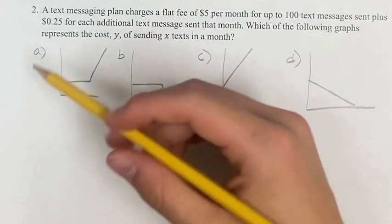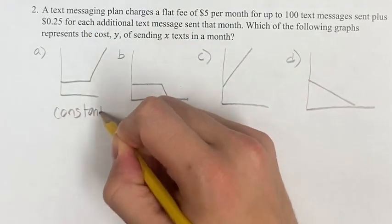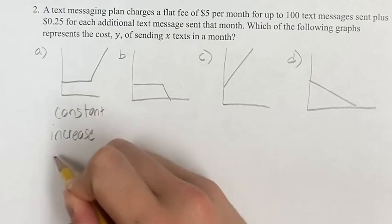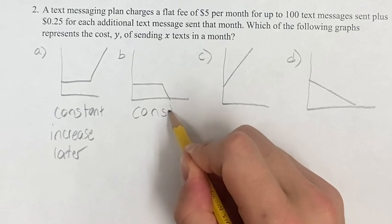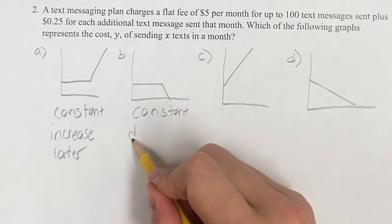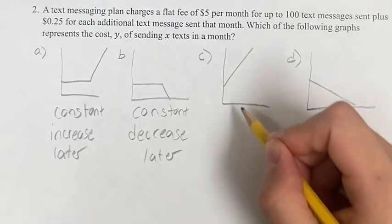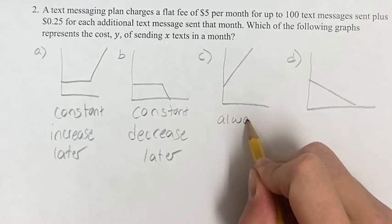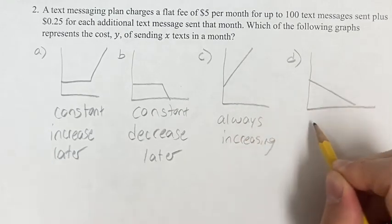For graph A, we have a constant rate and then an increase after a certain point. At B, we start constant once again and then it's actually a decrease after a point. C, we are just increasing the whole way, and D, we're always decreasing.